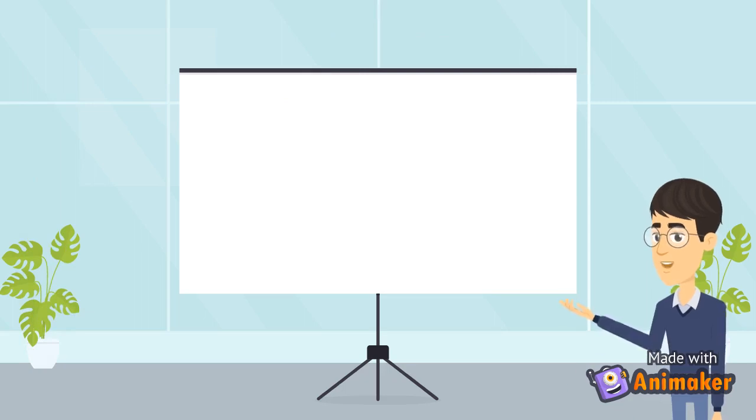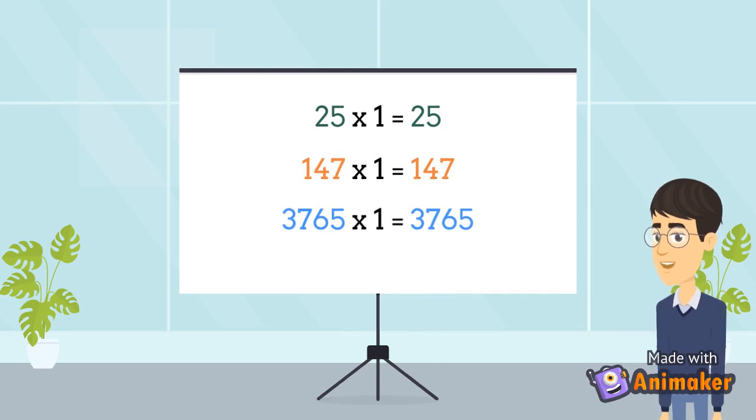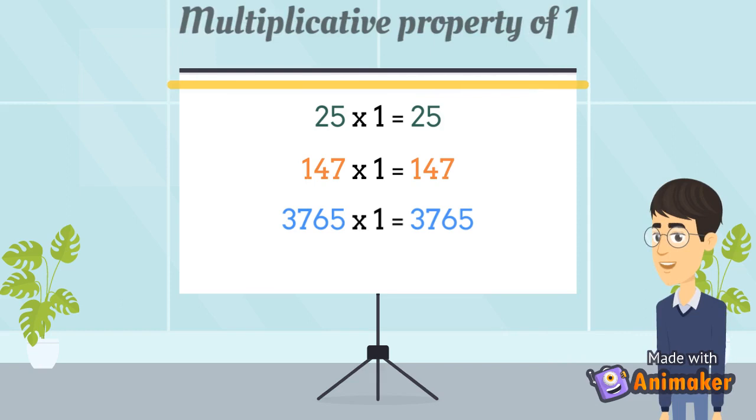Now let's multiply a few numbers by one. So twenty-five multiplied by one is twenty-five. One hundred forty-seven multiplied by one is one hundred forty-seven. And three thousand seven hundred sixty-five, a very large number, multiplied by one is also equal to three thousand seven hundred sixty-five. So, we see that the product of a number by one is the number itself. This is called the multiplicative property of the number one.